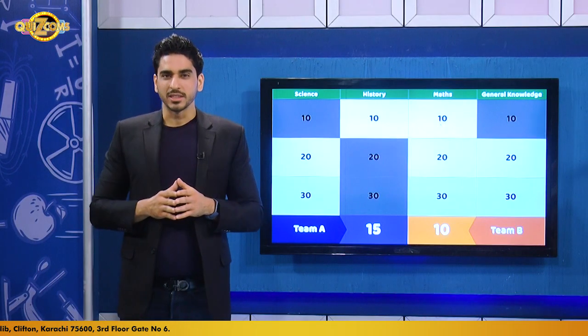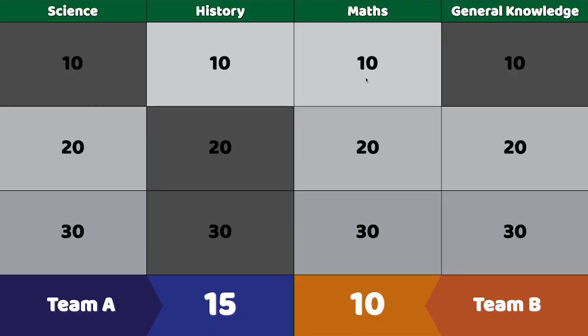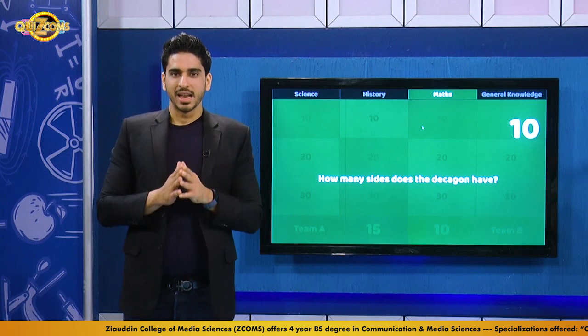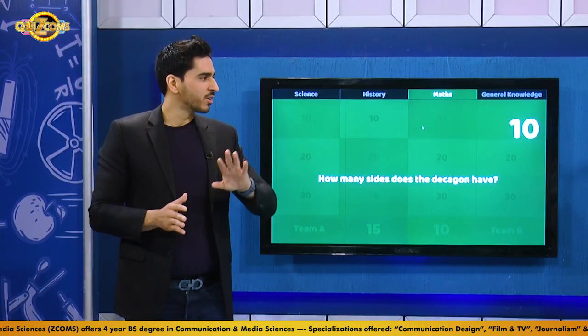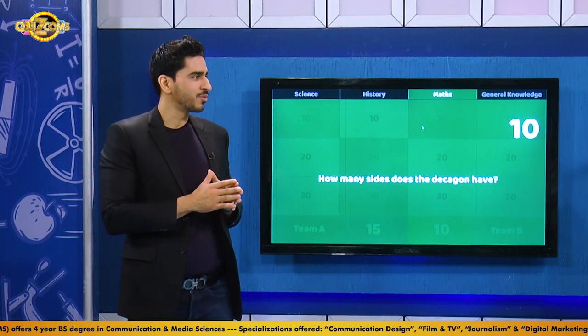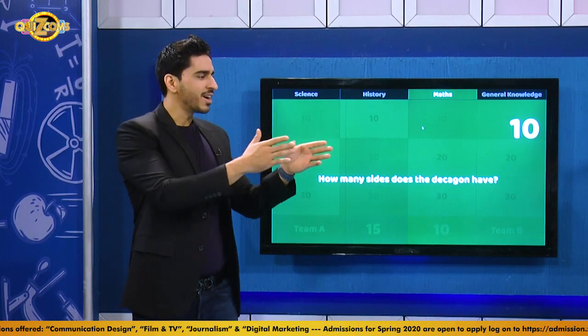Team A chooses maths for 10. The question: how many sides does a decagon have? Team A buzzes too early. Team B also buzzed early, so Team A gets a free shot with no penalty. They confer with their teammate and answer 10. That is absolutely correct! Very well done, Team A.